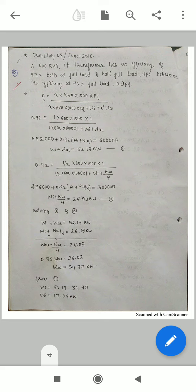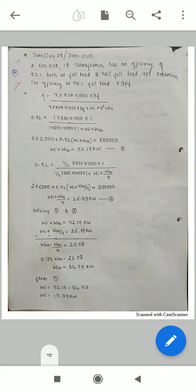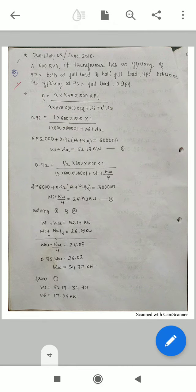In this problem, we are given a 600 kVA single-phase transformer that has an efficiency of 92% at both full load and half full load. This problem consists of two parts. The 92% efficiency is applicable for both full load and half full load. We need to determine its efficiency at 75% full load with 0.9 power factor.